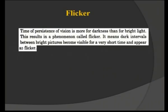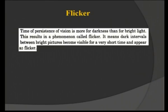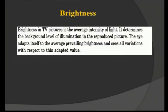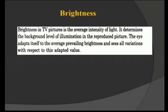Next is flicker — the opposite of persistence. Persistence is more for darkness than for bright light. This means dark intervals between bright pictures become visible for a very short time, and this appears as flicker. Next is brightness: the TV picture's average intensity of light determines the background level of illumination in a picture. The eye adapts itself to average prevailing brightness and sees all variations with respect to this adapted value. Picture quality, clarity, and visibility depend on factors like brightness, persistence, color, and contrast.